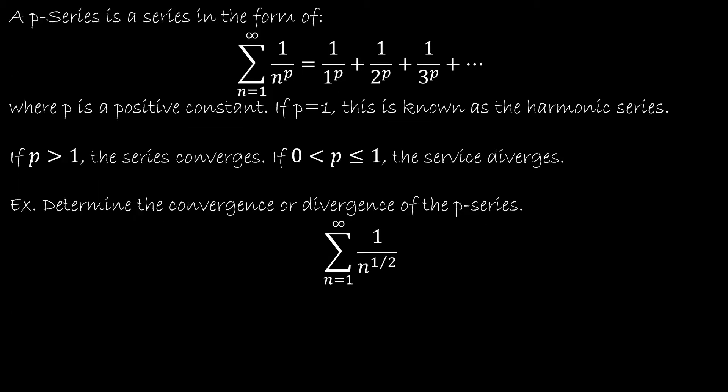A p-series is a series that's in the form of 1 over n to the pth power, where if you'll notice, the base is the one that is changing. So quite often we'll have a series where the exponent is changing. In this case, the base is changing, the base is n.